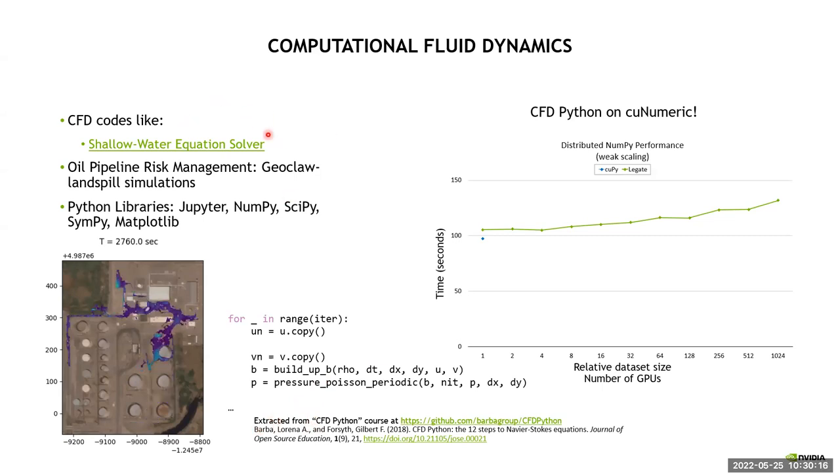It solves the shallow water equation. And so it gives you a rough idea of the simulation here on the left. This is an excerpt from the code and notice, there's really nothing to notice. The code is exactly how it was written before. And in this case, what we actually had to change was, instead of importing the numpy package, we import the koonumeric package. And otherwise, the user code remains the same. You're writing the code exactly how you would have written it with numpy.